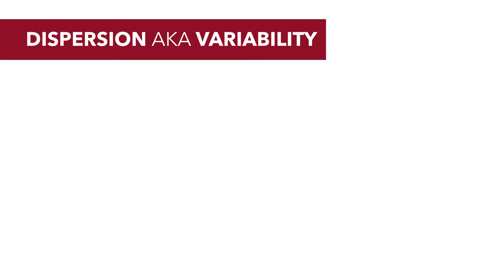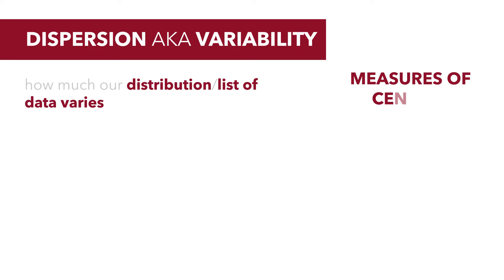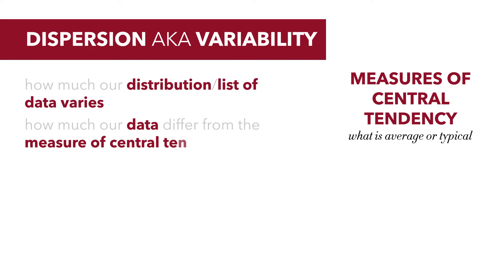What we're talking about here is just how much our data, how much our distribution or list of data varies. In previous tutorials, we talked about measures of central tendency. Those measures gave us an idea of what was average or typical. Dispersion and variability tell us how much our data differ from that measure of central tendency.